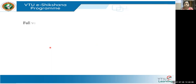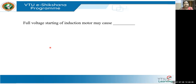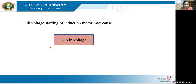Now, quiz time. Question 1: Full voltage starting of an induction motor may cause — what is the first thing you notice? The answer is a dip in voltage. Whenever you turn on your motor at home — like when pumping water — you can see for a second the lights blink: the intensity of the light reduces due to the reduction in voltage. Question 2: While using a stator resistance starter with a three-phase induction motor, the resistance of the starter should be kept at maximum point initially, since resistors are cut out in steps.